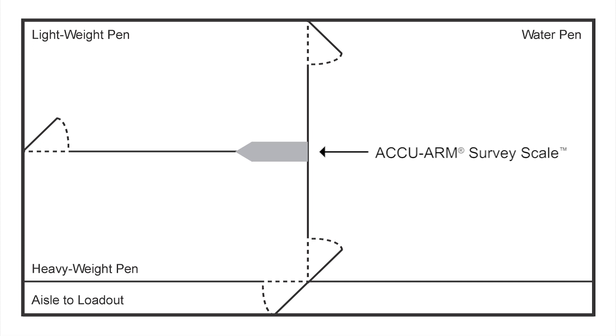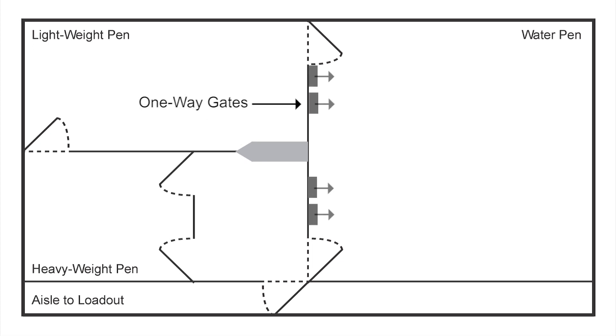The Osborne Survey Scale is a sorting scale that automatically weighs and sorts pigs as they move between the water and feeding areas. One-way gates ensure animals must pass through the survey scale to reach the feeding pens.